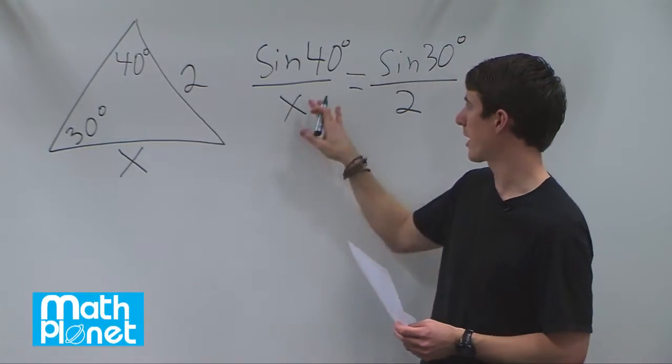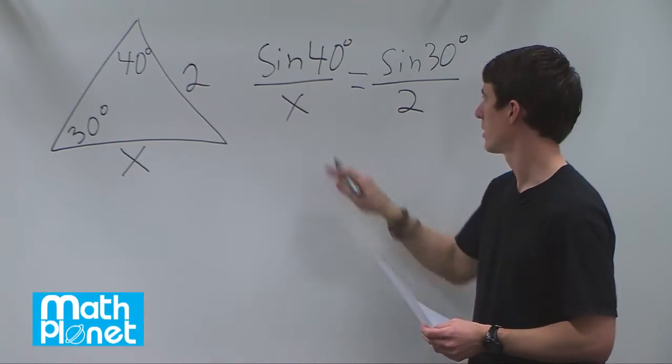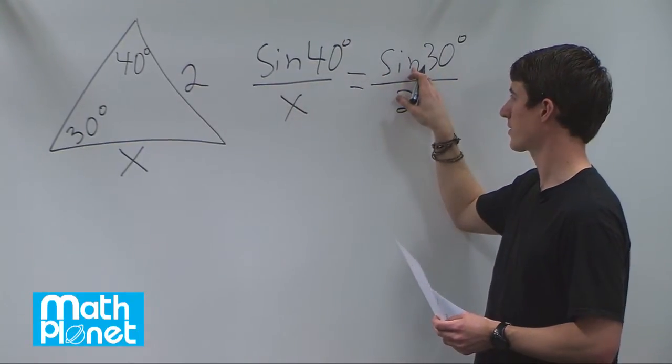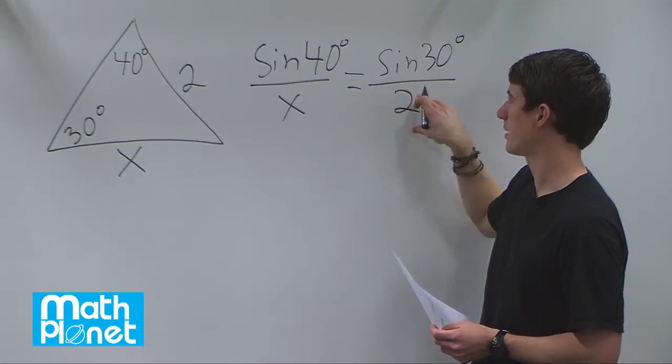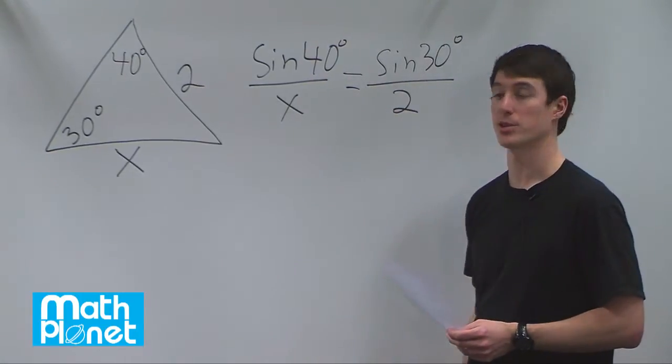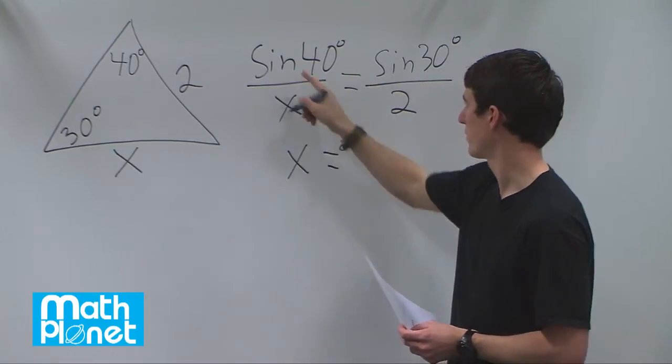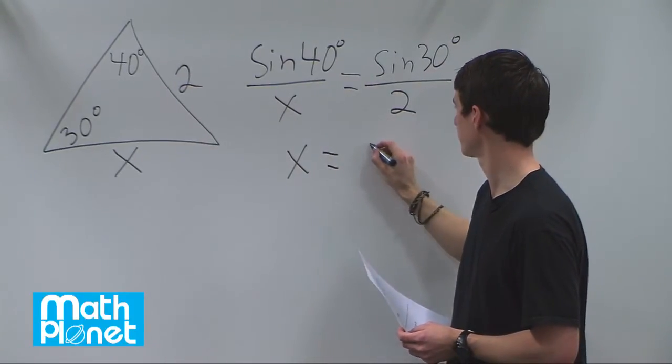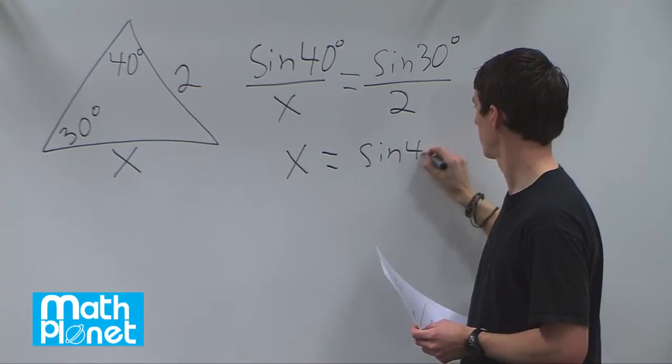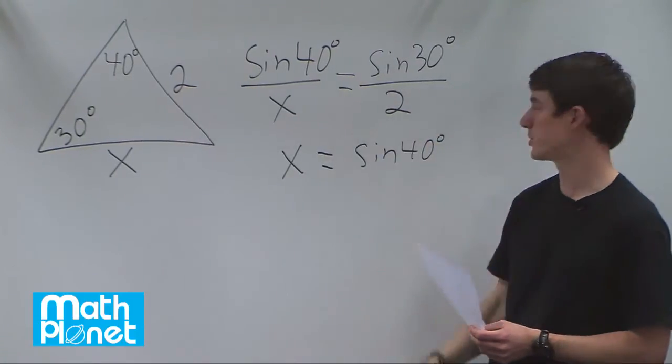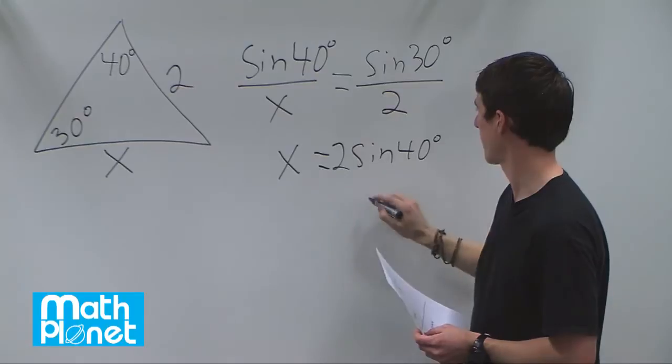Now we just need to go through here algebraically and solve for x. We're going to multiply both sides by x, and then we're going to divide by sine of 30 and multiply by 2. Then we'll just get x by itself. We'll have this over here. We've multiplied by 2 and divided by sine of 30.